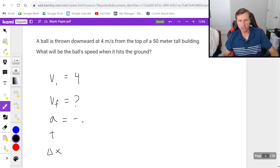Acceleration we did not talk about. Maybe you know it, maybe you don't, but that's going to be negative 9.8 because we use negative 9.8 for the acceleration of gravity in physics whenever an object is in free fall, like this problem is. The time is unknown and delta x is 50.